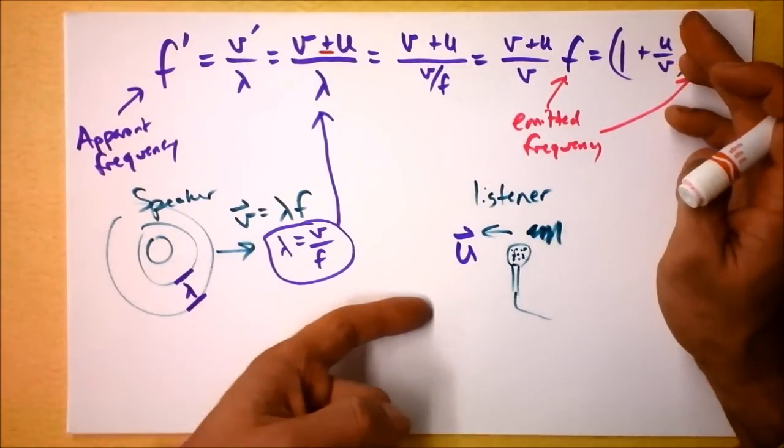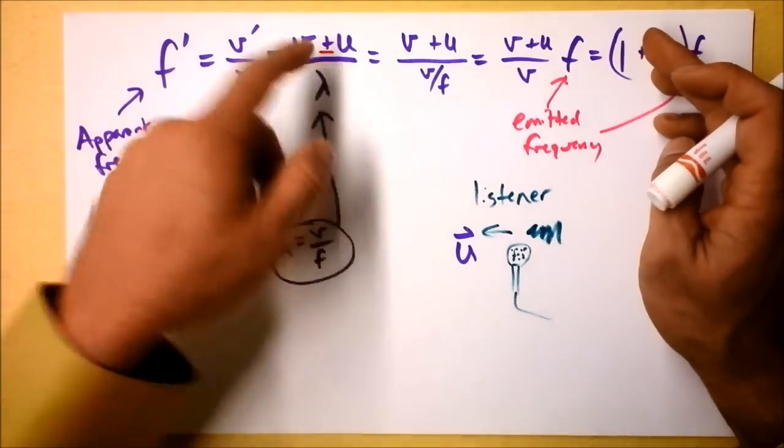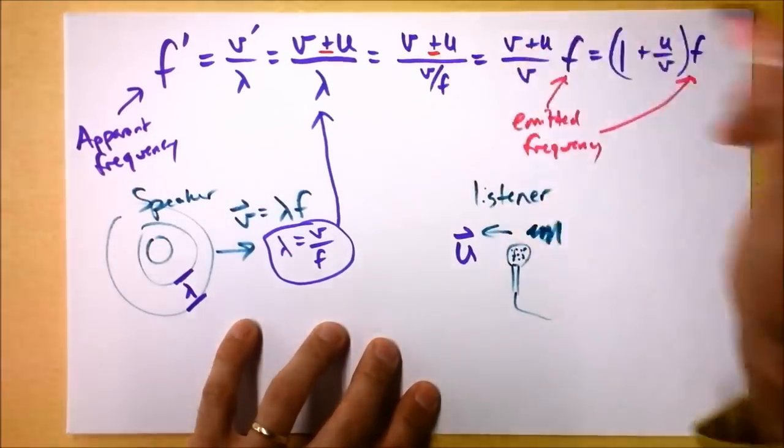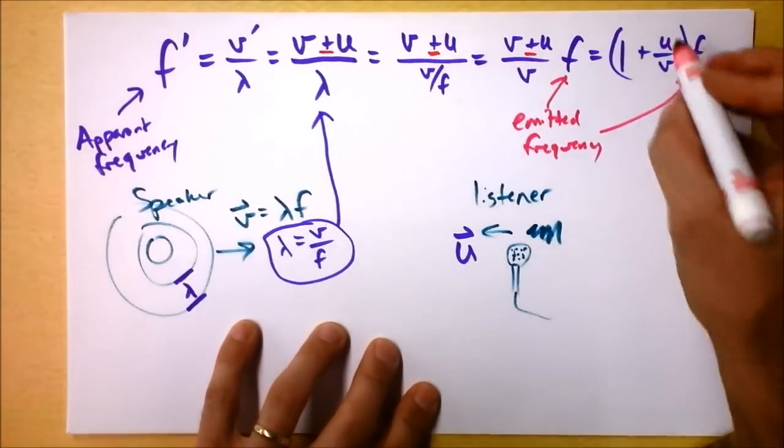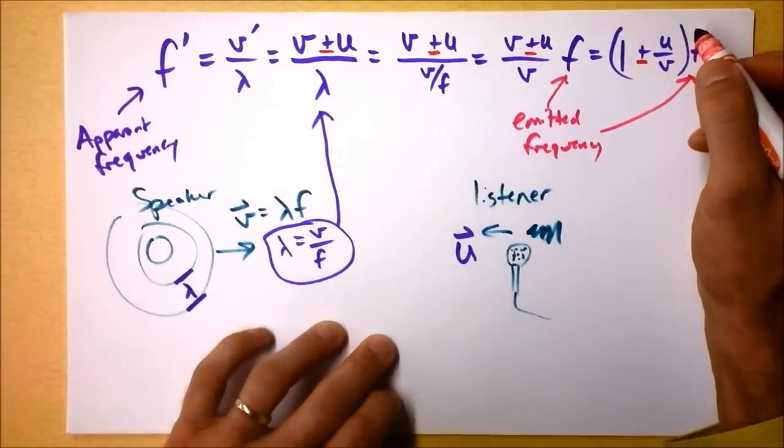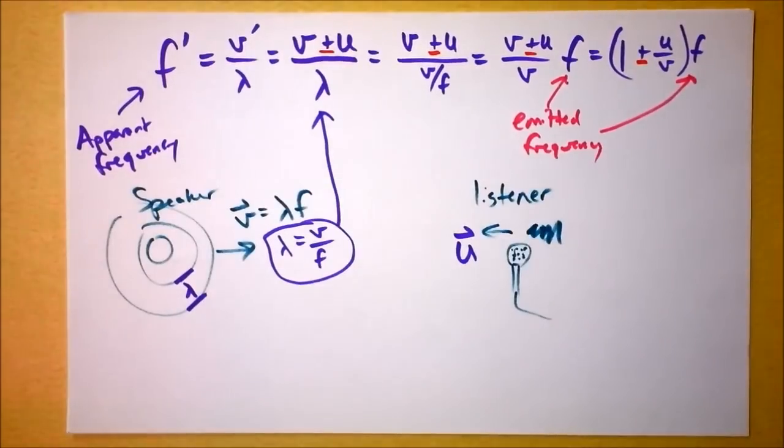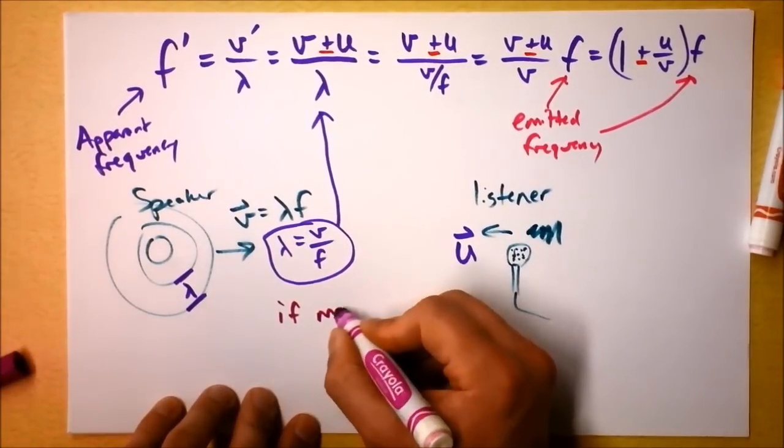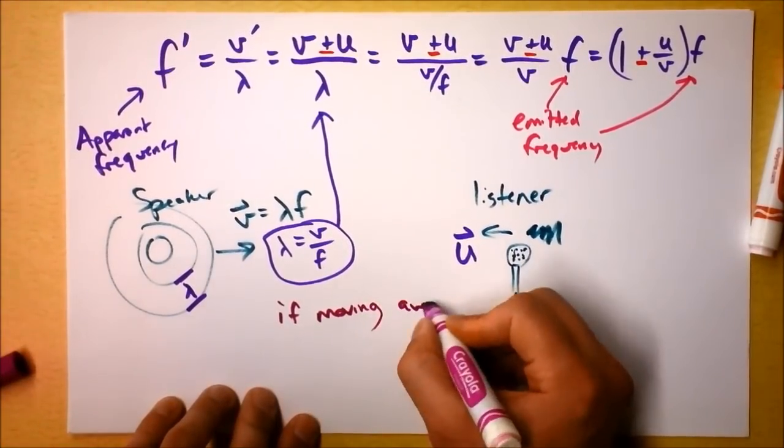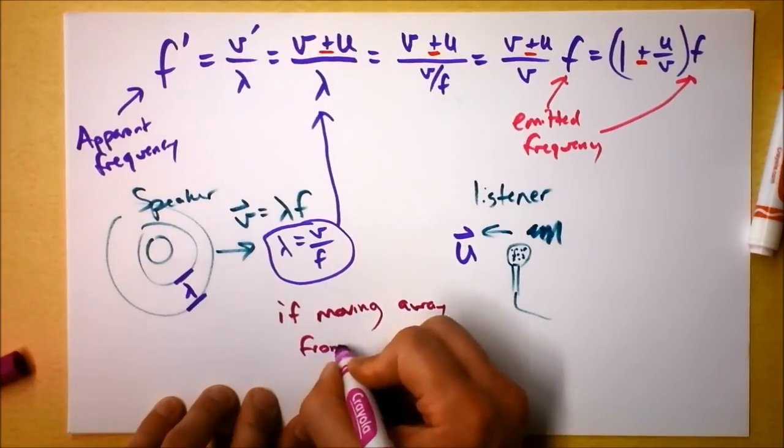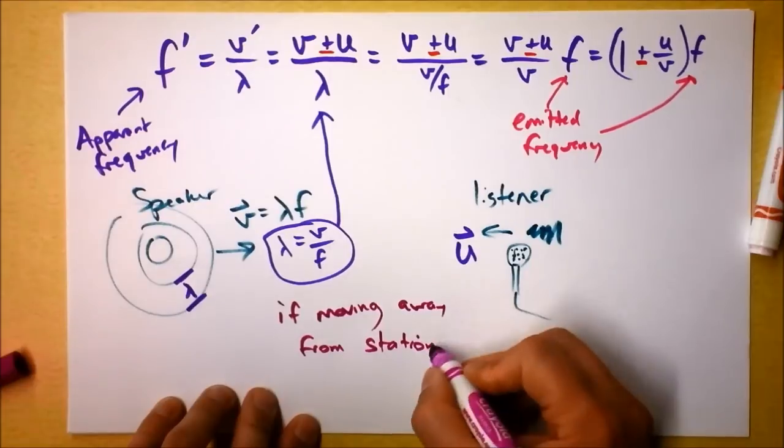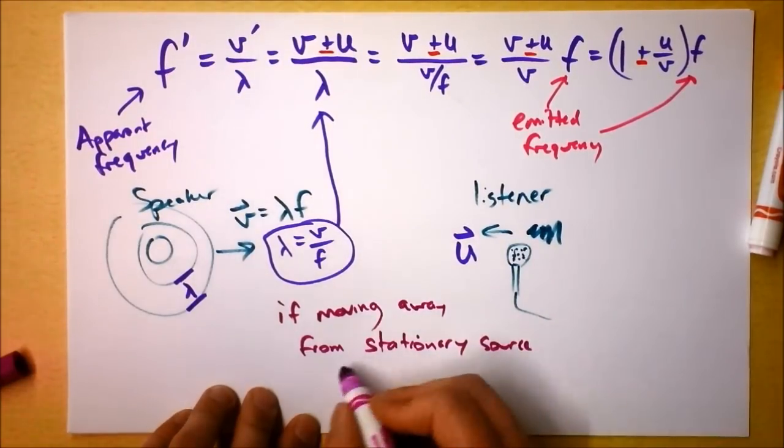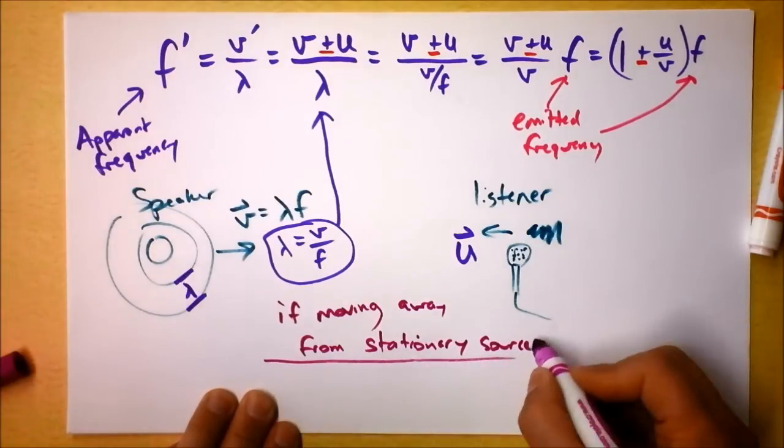So assuming that we're not going as fast as the wave, where stuff gets really crazy, assuming we're not going as fast as the wave, we can find that we'll simply subtract U instead of adding it. So I'll subtract U instead of adding it, I'll subtract U instead of adding it, and then I'll subtract right here. So let's look at that possible equation right there. If moving away from stationary source, that implies that the source could be moving in the future. Yeah, that's what's going to happen in the next video.